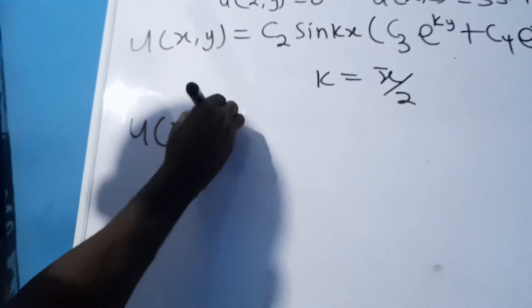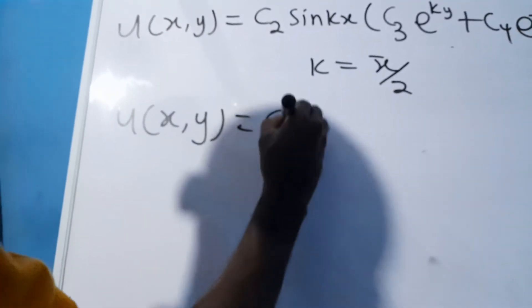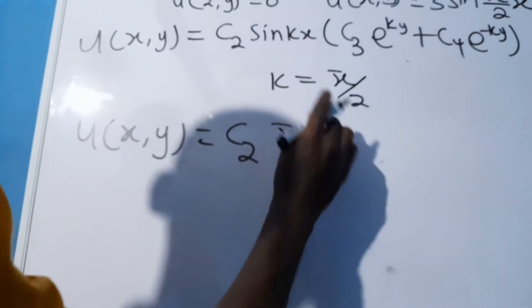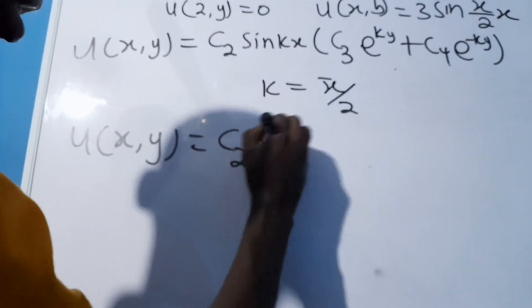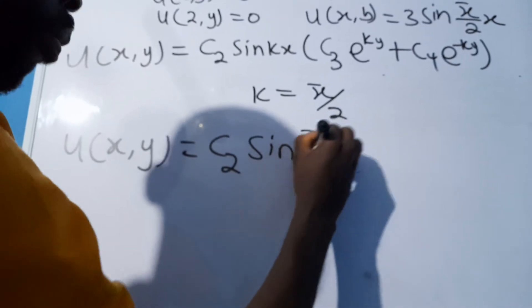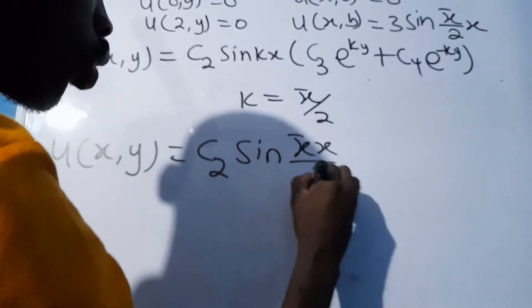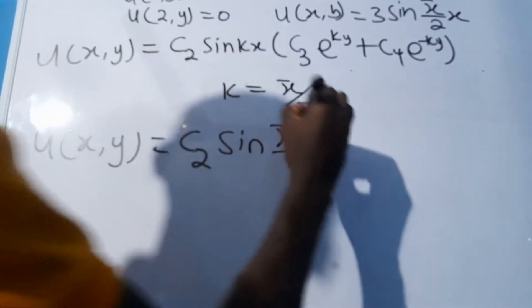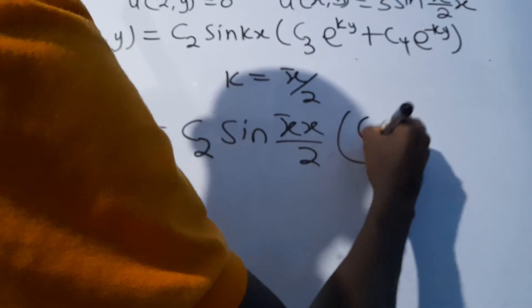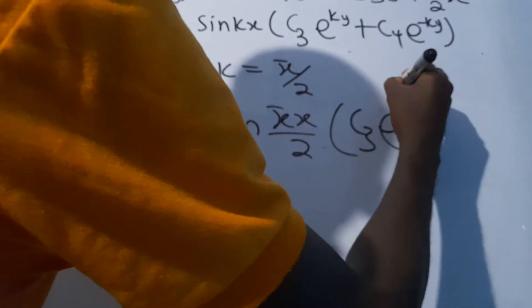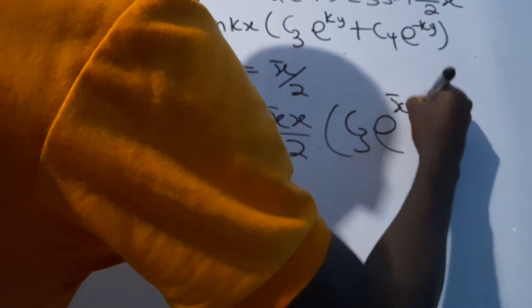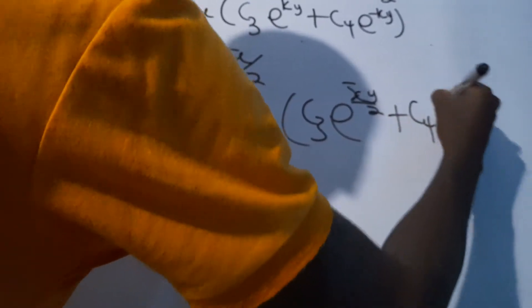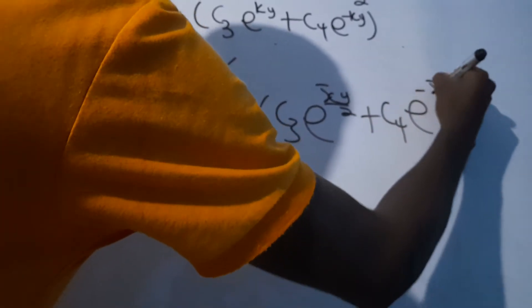Substituting k = π/2 into the general equation, we have: u(x,y) = c2·sin(πx/2) · [c3·e^(πy/2) + c4·e^(-πy/2)].